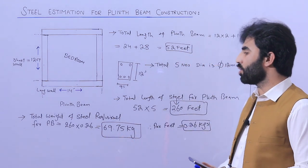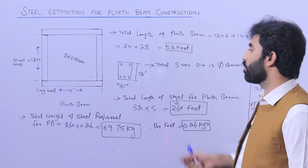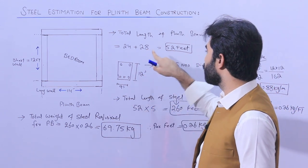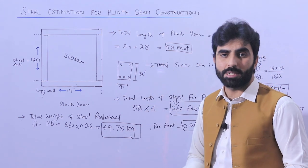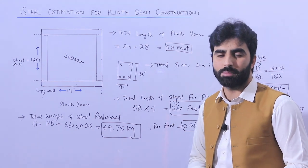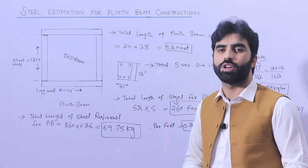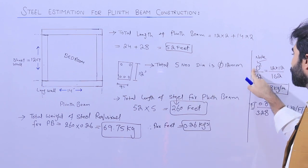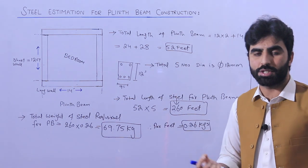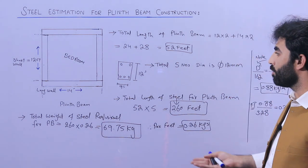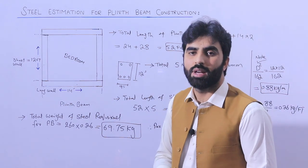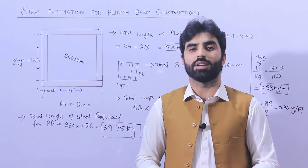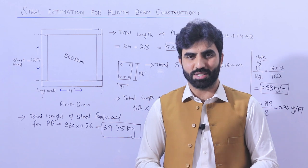Now if you need to find the lateral ties or stirrups: take the total length of 52 feet divided by the spacing of stirrups to get the total number of stirrups. For the stirrup diameter, for example 8 millimeters, use the formula 8×8 ÷ 162 to get the unit weight. Find the cutting length for each stirrup — I have already discussed this in many videos, the link is in the description. That's the easy way to find the steel calculation. Thanks for watching, see you in the next video.